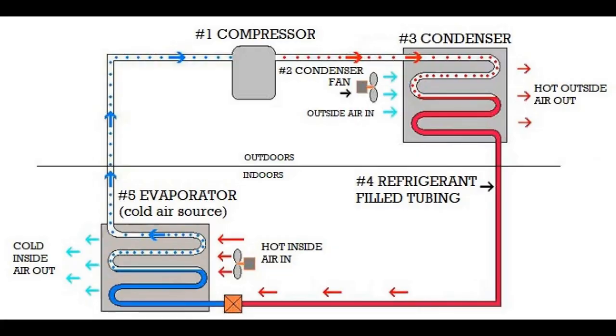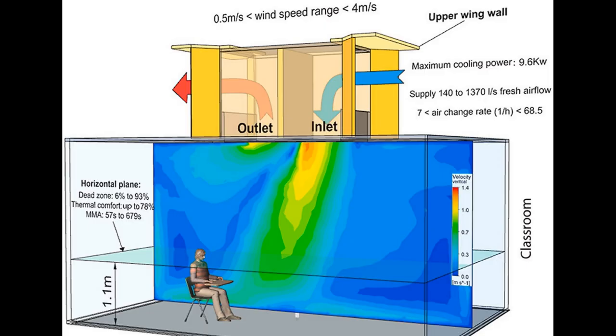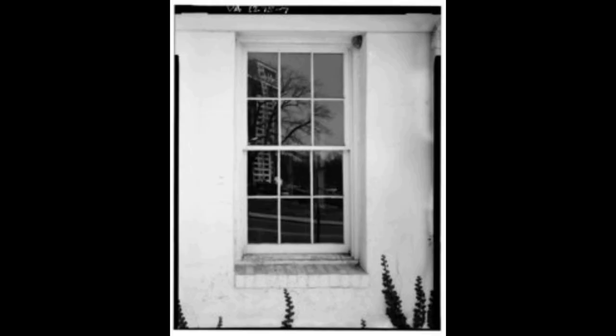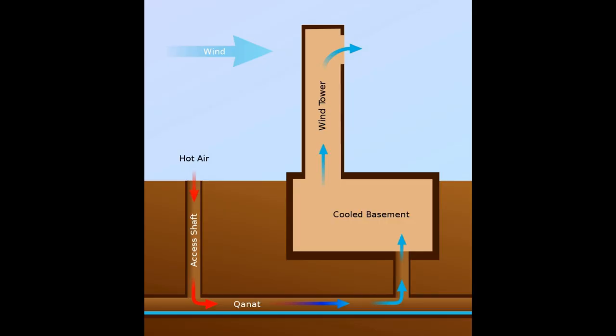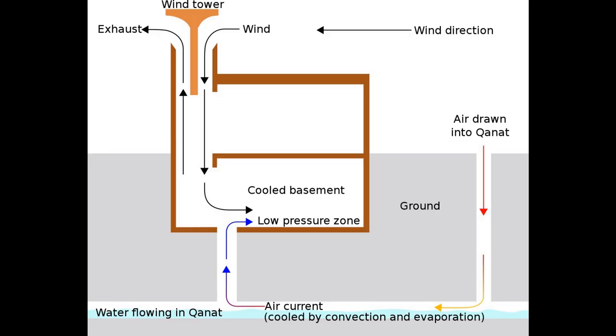Air conditioning can be achieved using a whole range of methods, including the infamous mechanical air conditioning that we're all used to, which is an active system. Or we can look at passive systems of air conditioning, including things like passive cooling, evaporative cooling, or ventilative cooling. Passive cooling is really a design philosophy for buildings that concentrates on the removal of heat using building design and no energy at all. The method involves the prevention of moving heat into a building, or removing heat from the building, using natural control.